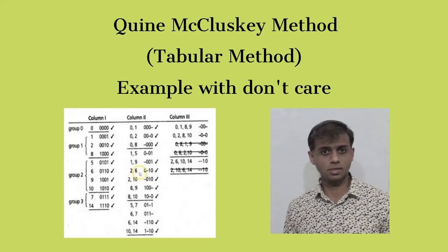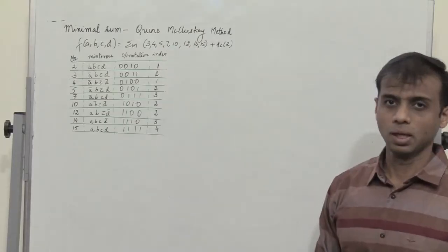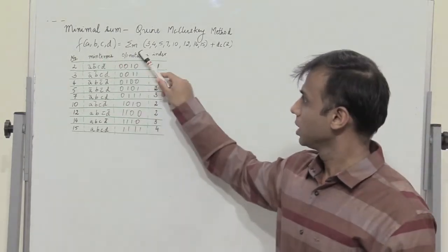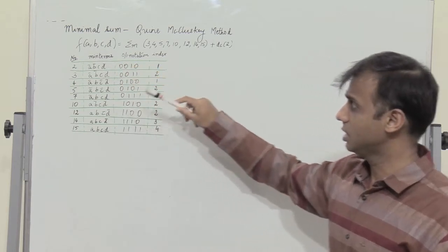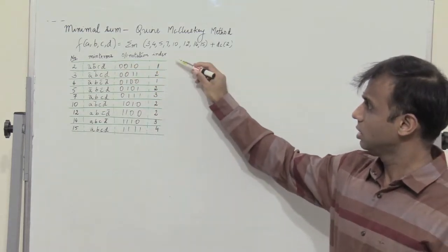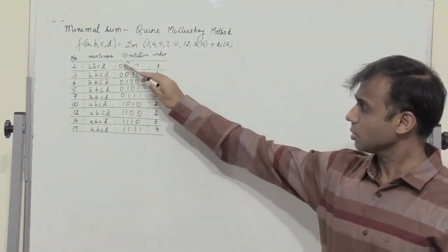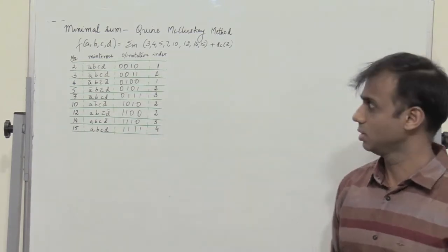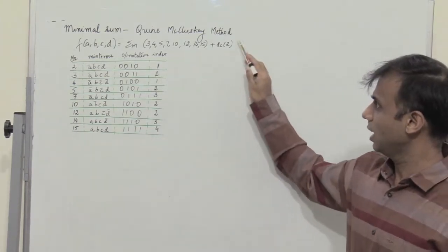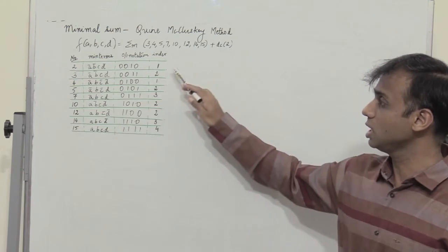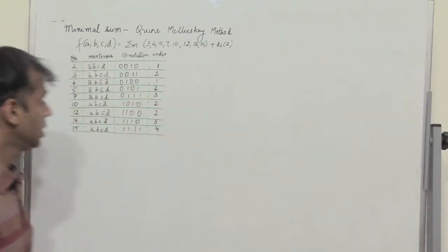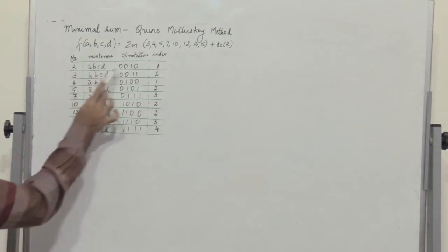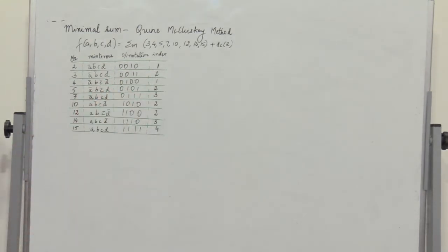Find the minimal sum using the Quine-McCluskey method. Let's consider an example. We have the expression F of variables ABCD with the minterms as given in the table. Since we have a don't care at position 2, we also need to consider a 1 for the don't care. So we have the binary notations given.